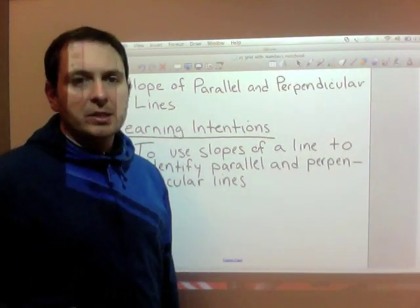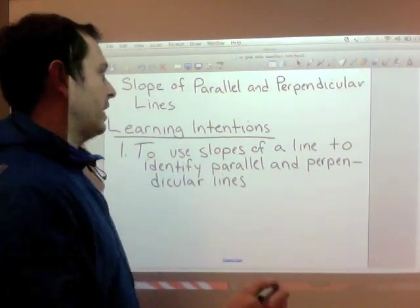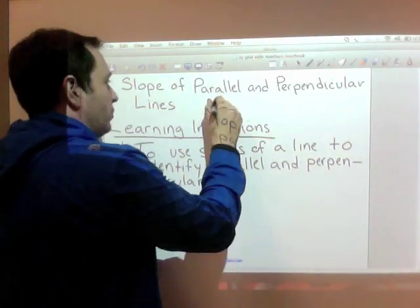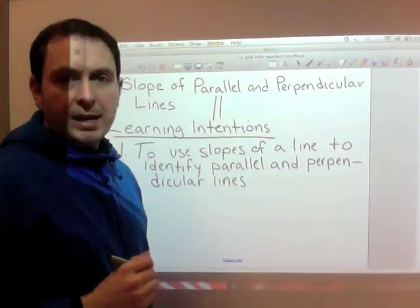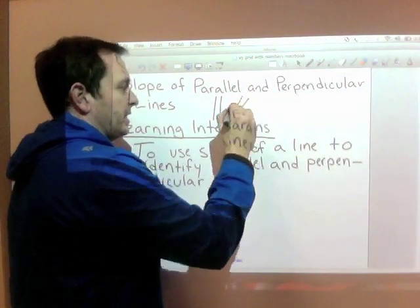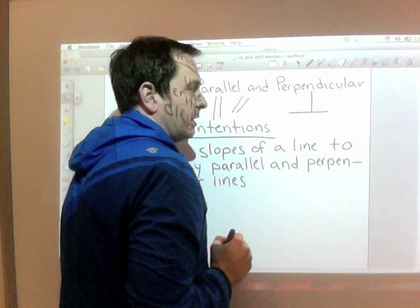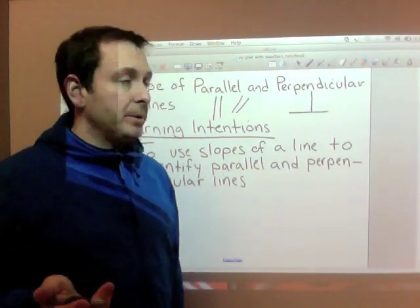Our lesson today is slope of parallel and perpendicular lines. The symbol for parallel is two straight lines, sometimes vertical, sometimes slanted. The perpendicular symbol looks like an upside down capital T.